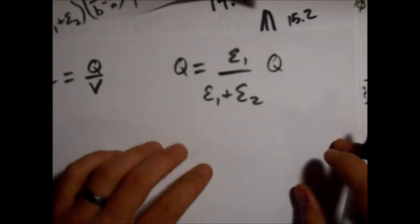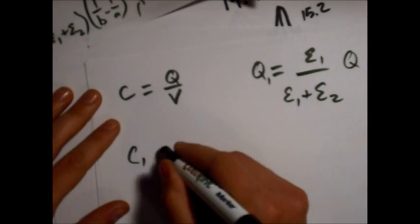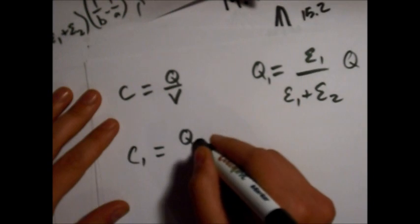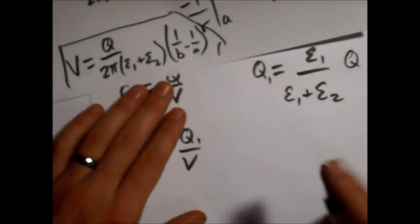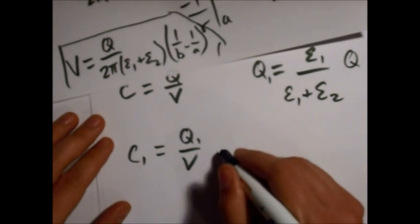So, q1 is actually just going to be proportional to this permittivity 1 over the sum of the two times q. So, it's just a simple sort of a percentage of the total, the sum of the permittivities. All right. So, if we want to find c1, q1 over v, and we know our v here.